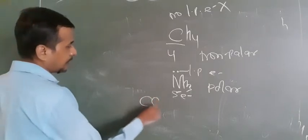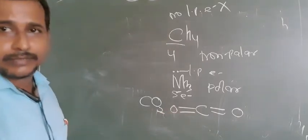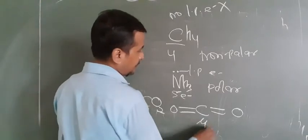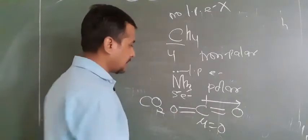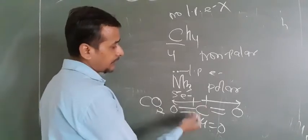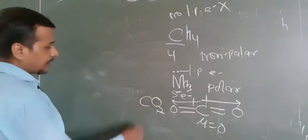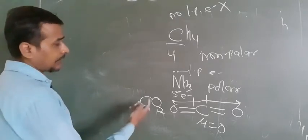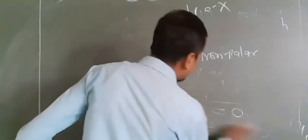Take another example: CO2. Is it polar or non-polar? You can draw the structure and find the value of the dipole moment (mu). Here mu equals zero because one dipole is on this side and another dipole is on the other side — they are vector quantities and cancel each other out. So the dipole moment value is 0, and CO2 is non-polar. Also, carbon has 4 electrons, all bonded with oxygen atoms — no electrons are left, confirming CO2 is non-polar.